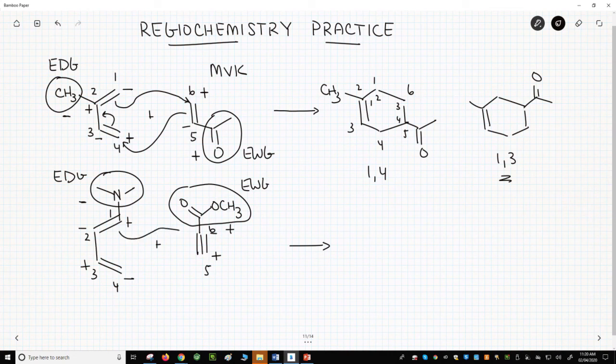Here's the mechanism, and our expected product will have an extra pi bond in it because our starting material had an extra pi bond in it.